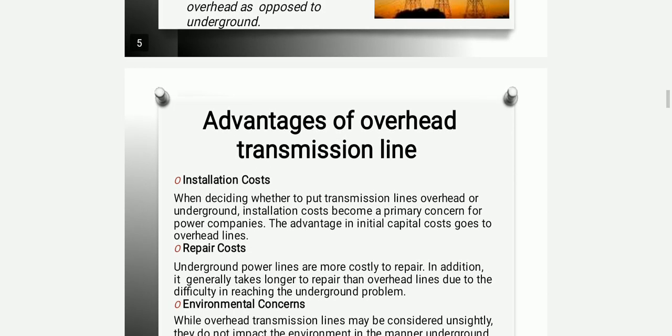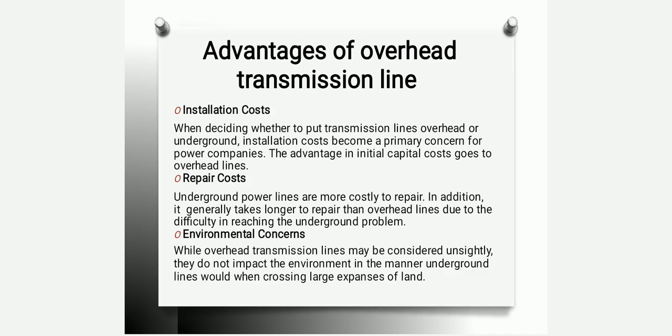The advantages of overhead transmission lines compared with underground transmission lines are: installation cost, repair cost, and environmental concern. For installation cost, the advantage in initial capital cost goes to overhead lines — it is more advantageous to lay an overhead line compared to an underground line. For repair, it is very difficult to find a fault in an underground line and repairing it may take much more time compared with overhead. For environmental concern, while overhead lines may be considered an eyesore, they do not impact the environment in the same manner as underground lines when crossing large expanses of land.